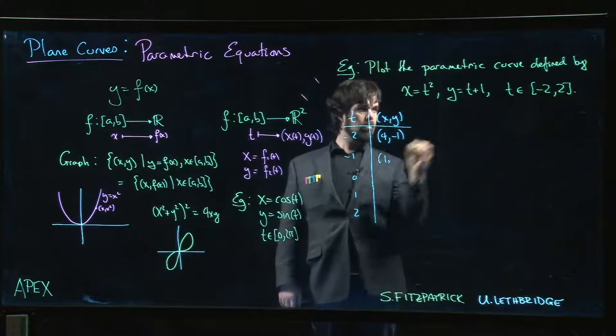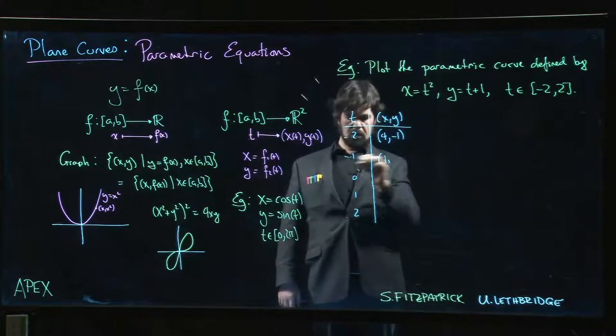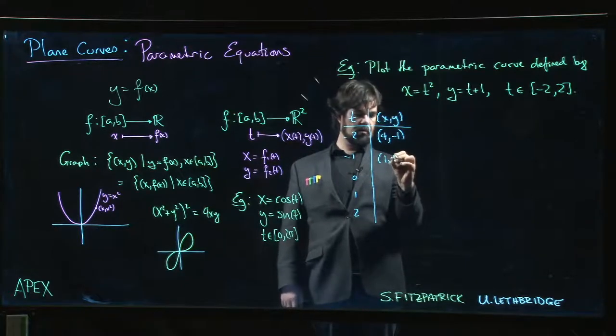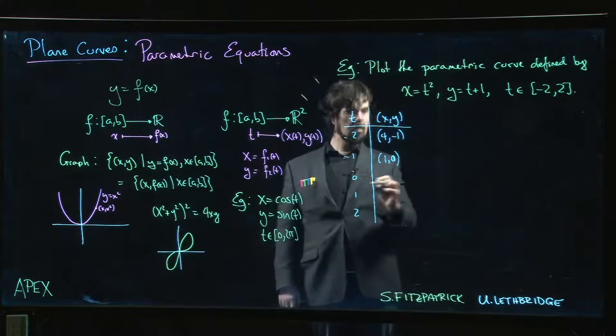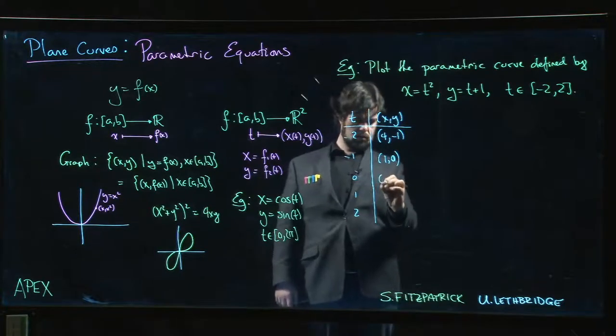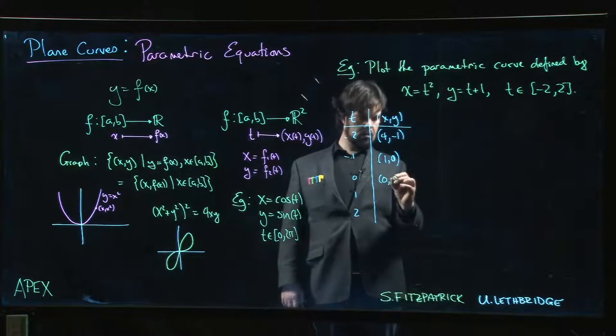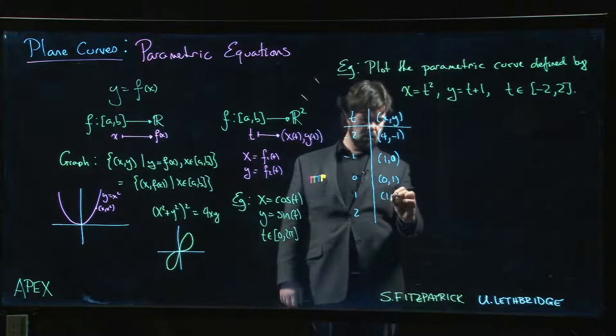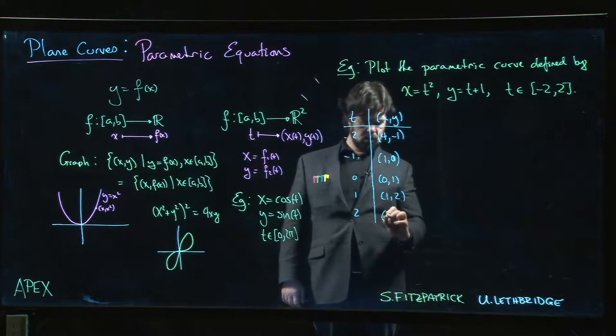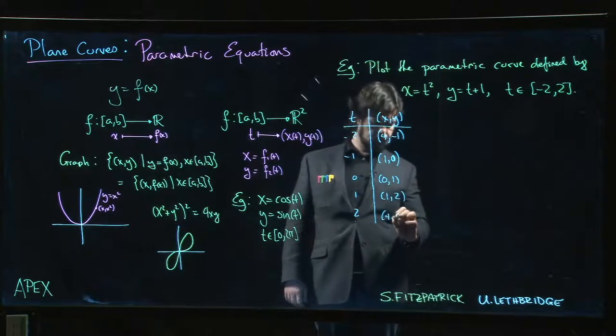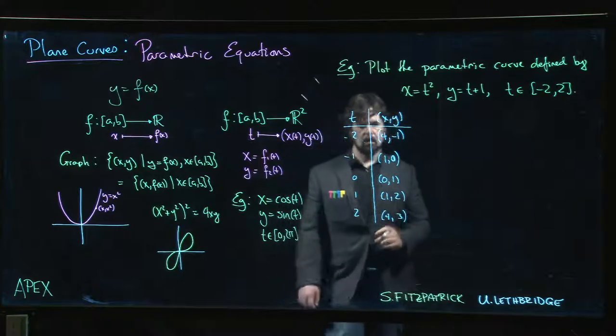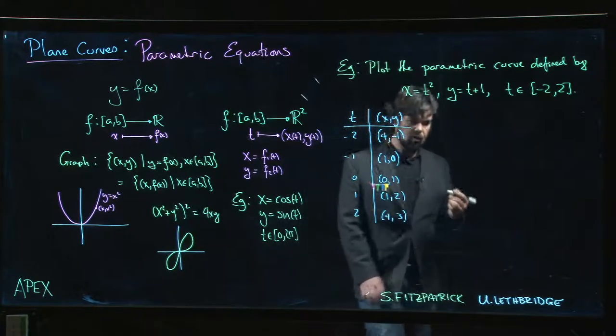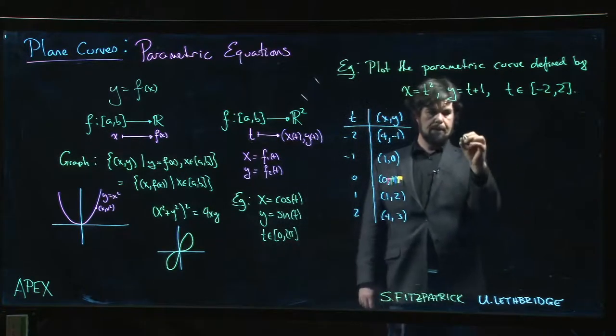-1 + 1 we get 0. At 0 we're going to get 0, 1. At 1 we get 1, 2. At 2 we hit 4, 3. Okay, so we can plot those points.